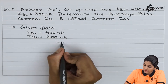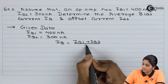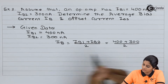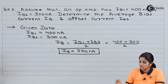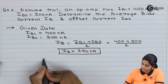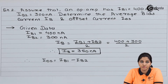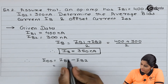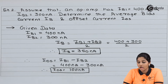The average bias current IB equals IB1 plus IB2 divided by 2, as it is the average of current flowing through inverting and non-inverting terminals of the op-amp. So the average bias current IB is equals to 350 nA. Now let's find out the second parameter, that is offset current IOS. The value of IOS is the algebraic difference between IB1 and IB2. So when we substitute the values we get IOS equals to 100 nA.